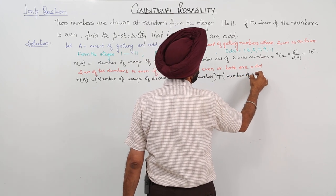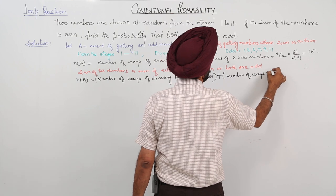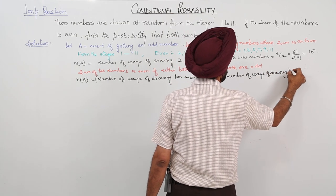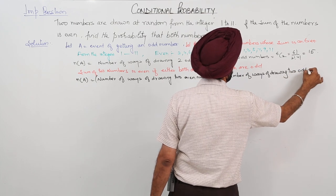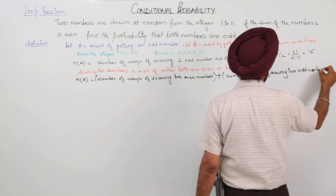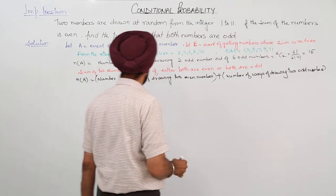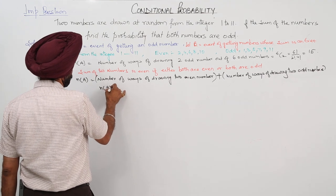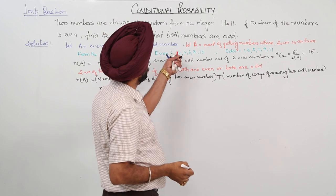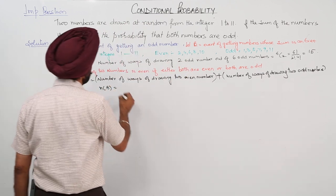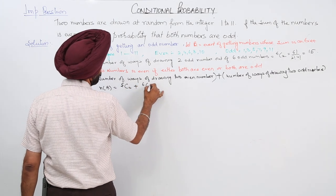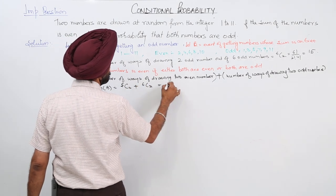n(B) is equal to - even numbers are how many? 1, 2, 3, 4, 5, so 5. 2 out of 5 plus 2 out of 6, and this is equal to 5 factorial upon 2 factorial times 3 factorial plus 6 factorial upon 2 factorial times 4 factorial.